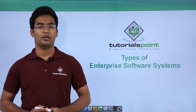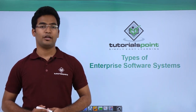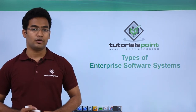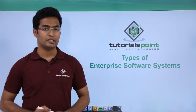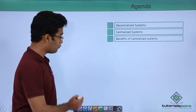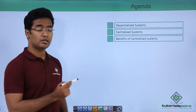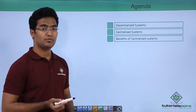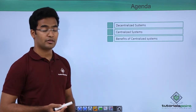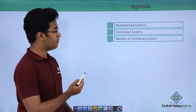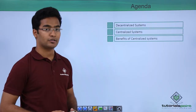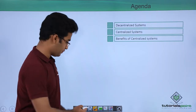In this video we will see different types of enterprise software systems. Here is the agenda: first we will discuss decentralized systems and the demerits of decentralized systems, then we will see centralized systems with the benefits of centralized systems.